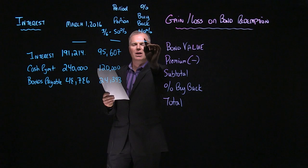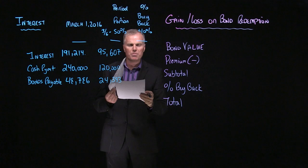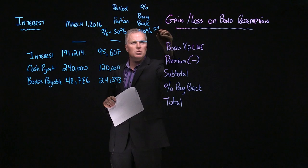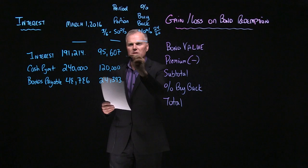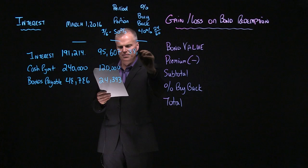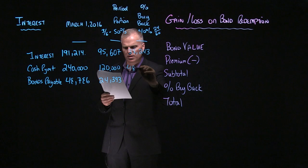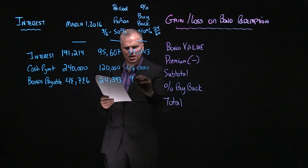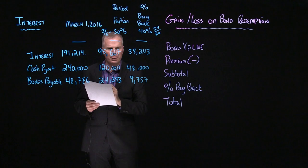Now the next calculation I have to do is I have to calculate the percentage buyback. And if you take a look at the question, we're going to buy back $2.4 million out of the $6 million bonds. So $2.4 divided by 6 is how I get 40%. So take this number, multiply it by 40%. $38,243. And again, there might be rounding errors here because I'm not showing the decimals, and that's fine. $48,000 for my cash payment and $9,757 for my bonds payable number.